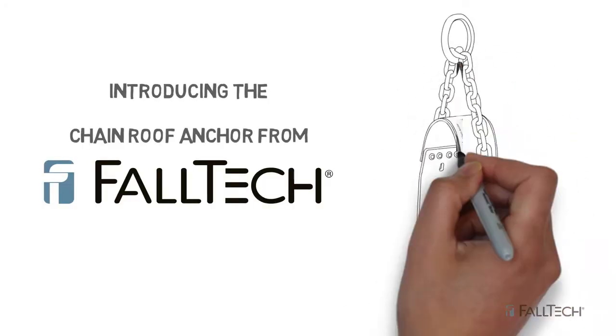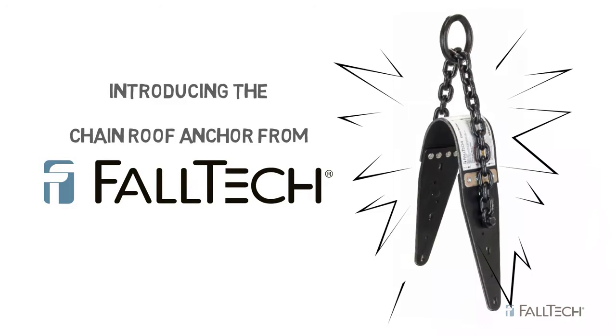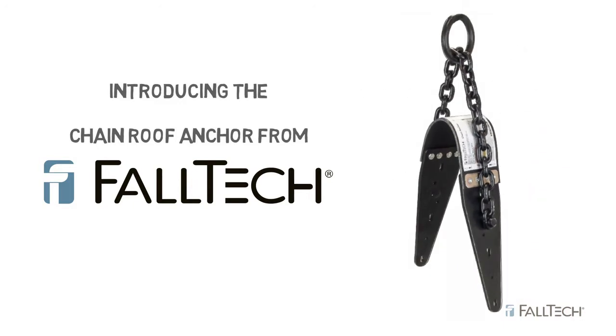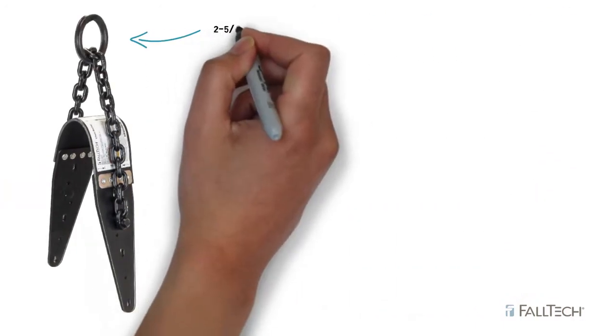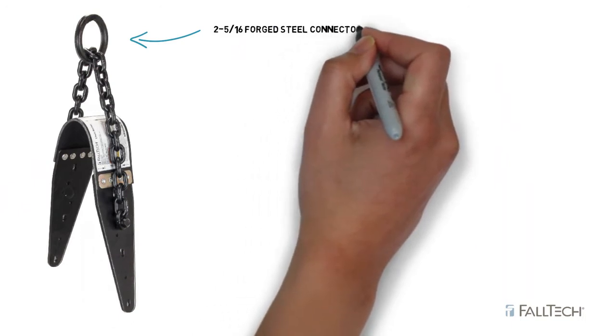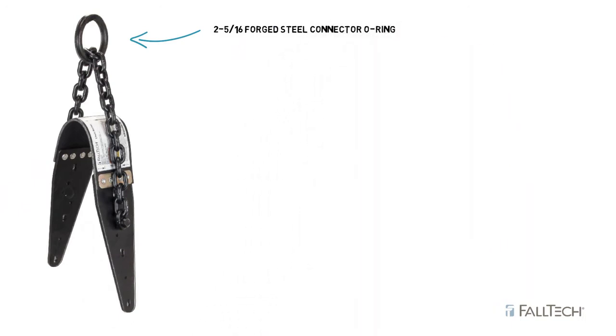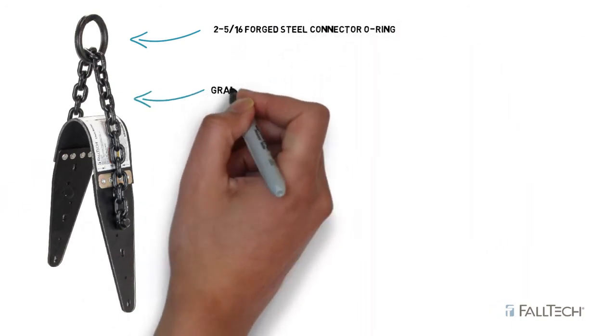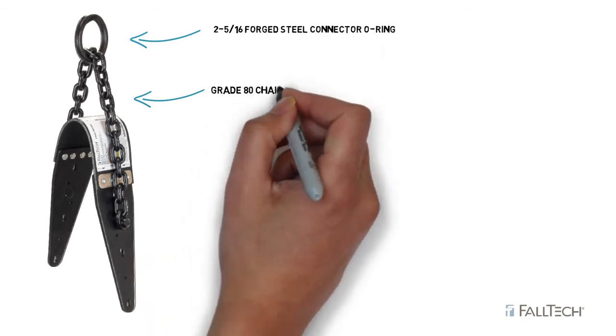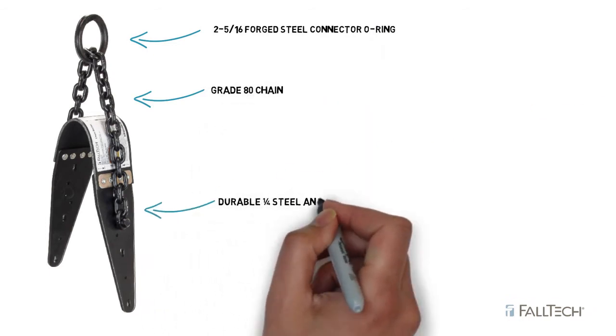Introducing the Chain Roof Anchor from FALTEC. The Chain Roof Anchor is made of a 5/16 inch steel O-Ring, Grade 80 chain and attached to durable powder coated steel anchoring plates.